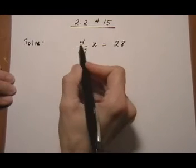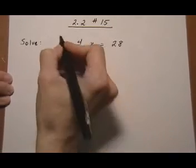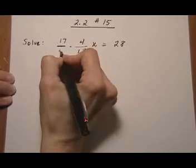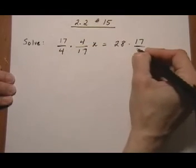If we want to get rid of this fraction here, 4 seventeenths is being multiplied to x, we multiply the fraction by its reciprocal. So, flip it over and multiply. That's okay to do as long as we do the same thing to the other side.